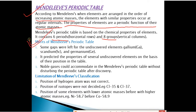Merits of Mendeleev's Periodic Table: He left gaps for undiscovered elements like gallium, scandium, and germanium, and predicted their properties based on their position in the table. Noble gases could also be accommodated in Mendeleev's periodic table without disturbing it after their discovery.